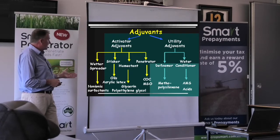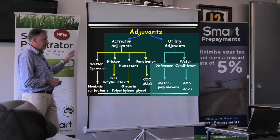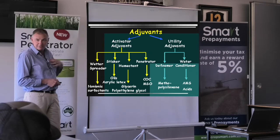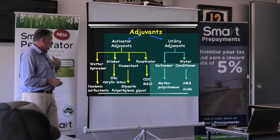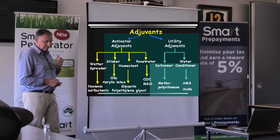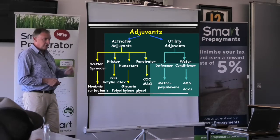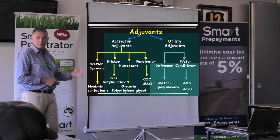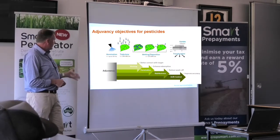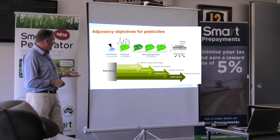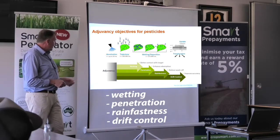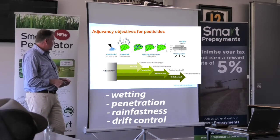When it comes to glyphosate, we're trying to actually include as many of these different aspects in the can as we can. That's how we want to try and provide a formulator such as CropSmart a chemistry that's going to allow the farmer to do as many things as they can without adding too many things. For pesticides specifically, the main ones we're focusing on are wetting, penetration, rainfastness, and drift control.